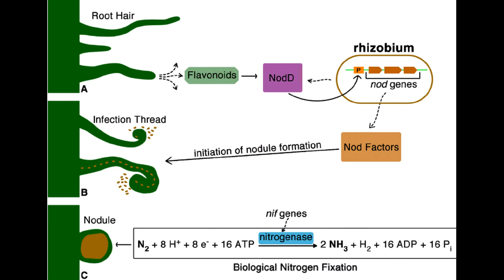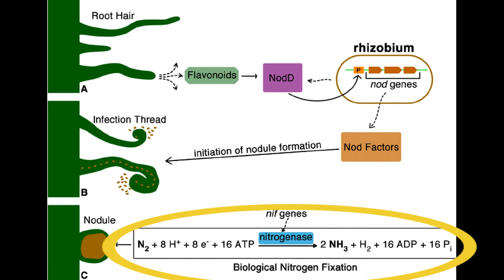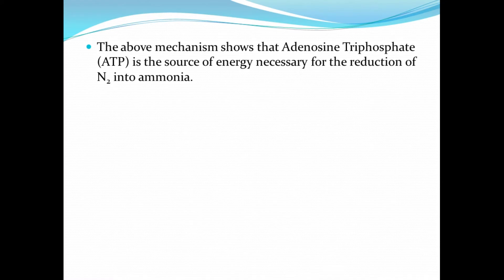Nitrogenase is a biological catalyst found naturally in certain microorganisms such as symbiotic Rhizobium and Frankia, or free-living bacteria. This enzyme catalyzes the conversion of atmospheric nitrogen to ammonia, and ATP is the source of energy necessary for this reduction of nitrogen to ammonia.